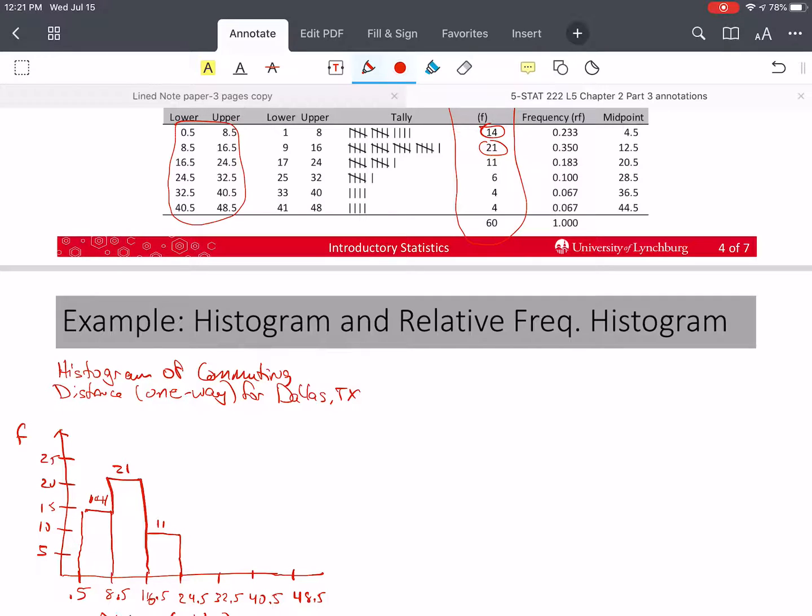And so the next one's going to be 11. Let's say that's about here. And then I have 6. Let's say that is about here. And then 4 for the next two. So now I am finished with a histogram and I can look at the shape of the histogram.